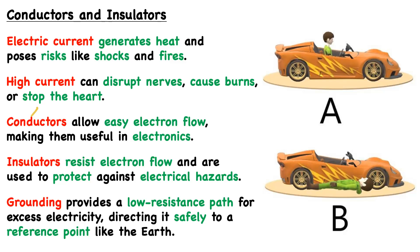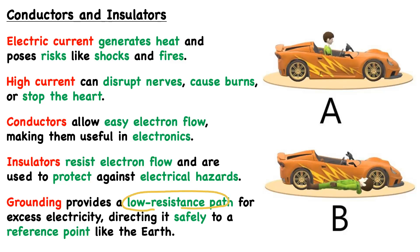Returning to the dangers of current, we can think of ourselves as conductors vulnerable to those dangers, and we can think of safety equipment that prevents this as our insulators. Lastly, we have grounding, which provides a low-resistance path for excess electricity, directing it safely to a reference point like the Earth — and thus we call it grounding. We can understand much of this through the example on the right.